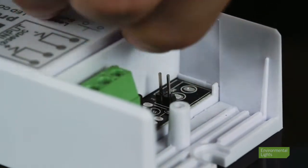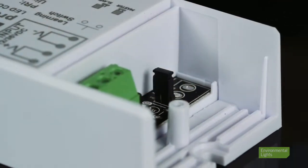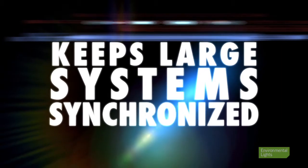For larger installations, you can also set one receiver per zone to be a master receiver by placing the included jumper across both pins. Master receivers will relay commands from any paired controllers to all other receivers in that zone. This ensures that large systems stay synchronized.